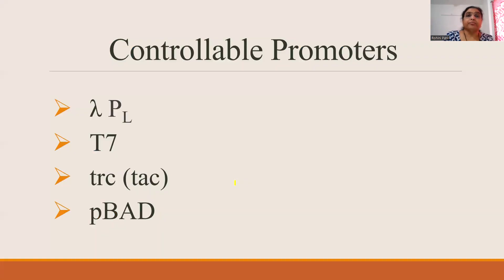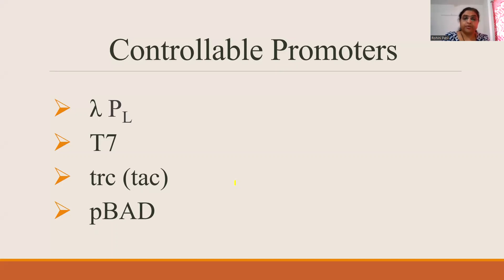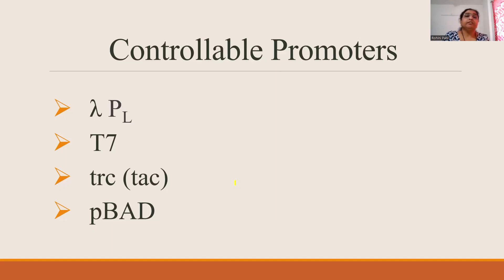The controllable promoters used are: lambda PL, T7, trc, tac, and pBAD. Lambda PL is from the lambda phage and T7 is from the T7 phage — these are phage promoters. trc and tac are hybrid promoters, made from a combination of the lac promoter and the trp promoter. pBAD is the promoter from the arabinose operon. Lambda PL, T7, trc, and tac are strong promoters, allowing high levels of gene expression.